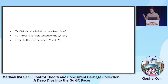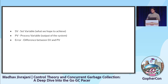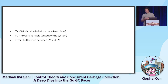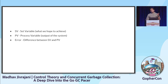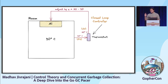Now let's formalize things. SV, the set variable, is what we hope to achieve. PV, the process variable, is the output of the system. The error is essentially the difference between the set variable and the process variable. In our diagram, the process variable is 30 degrees Celsius, the set variable is 25 degrees Celsius, and the error is 25 minus 30.